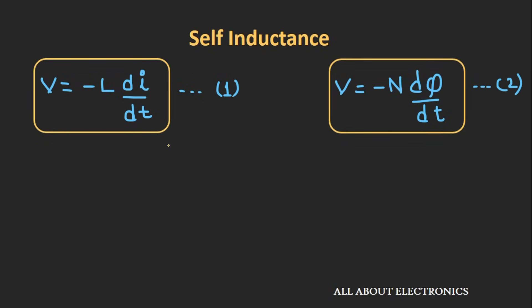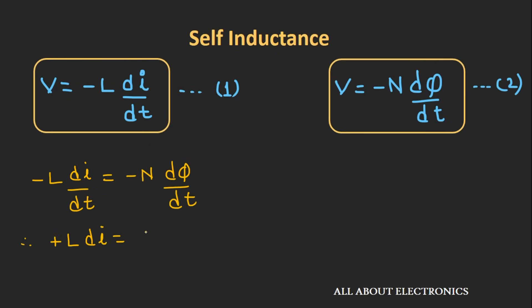Now we have two equations, so let's compare them. We can write -L di/dt = -N dφ/dt, or L di = N dφ, which means L × I = N × φ.